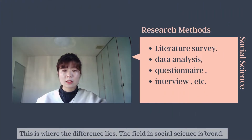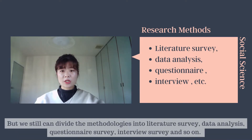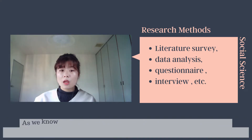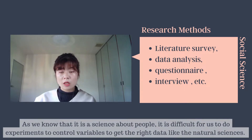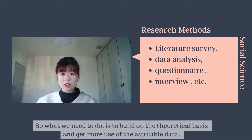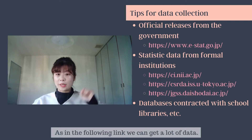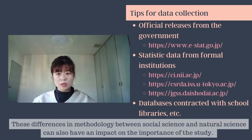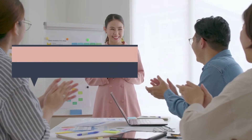In social science, the field is broad, but we can still divide the methodologies into literature survey, data analysis, questionnaire survey, interview survey, and so on. As it is a science about people, it is difficult to do experiments to control variables and get the right data like in natural science. What we need to do is to build our theoretical framework and make use of the available data. These differences in methodology between social science and natural science can also have an impact on the significance of the study.